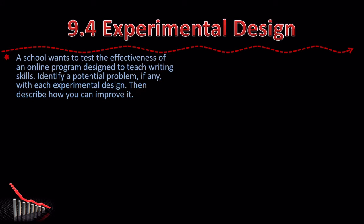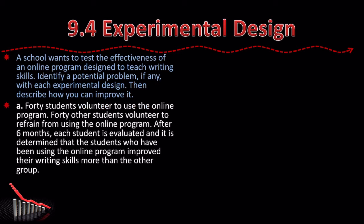A school wants to test the effectiveness of an online program designed to teach writing skills. Identify the potential problem, if any, with each experimental design and describe how you can improve it. Forty students volunteer to use the online program; forty other students volunteer to refrain from using it. After six months, each student is evaluated, and it is determined that the students using the online program improved their writing skills more than the other group. What's the issue? Probably the word 'volunteer.' The groups are not randomized, and those who volunteer to learn writing and those who volunteer to not learn writing are likely different — so the groups are not similar.